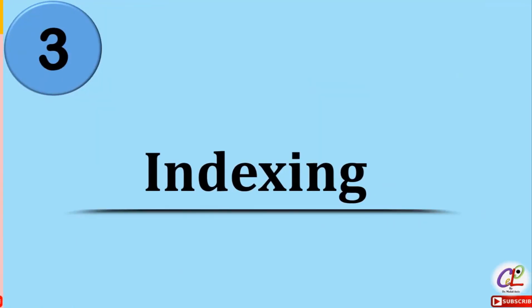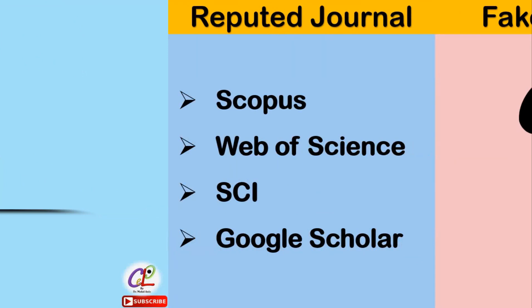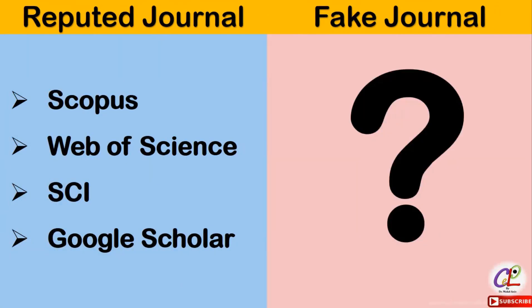Next is the indexing of that particular journal. The journal should be indexed in very good databases such as Scopus, Web of Science, SCI, and Google Scholar. The journal should have at least indexing in Google Scholar so that it can have credibility for publishing your research article. While the fake journal will have indexing in many databases except these kinds of reputed databases.